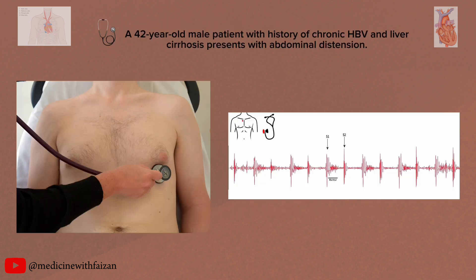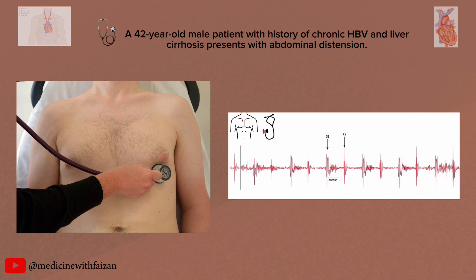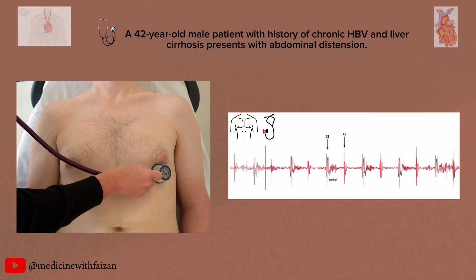A 42-year-old male patient with a history of chronic hepatitis B viral infection and liver cirrhosis presents with abdominal distension. You listen to their precordium and this is what you hear. This is most likely an innocent murmur.